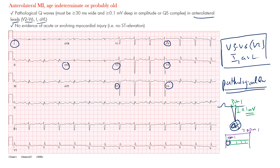The other thing we want to see is no evidence of acute or evolving myocardial injury — so no ST segment elevation. If you have an injury pattern, you'll see Q waves and ST segment elevation together. Looking at these leads, V1 is a right precordial lead that may be involved, but here we're focusing on V2 through V6. Notice there may be a small R wave in V2 and V3 — but there's very poor R wave progression.